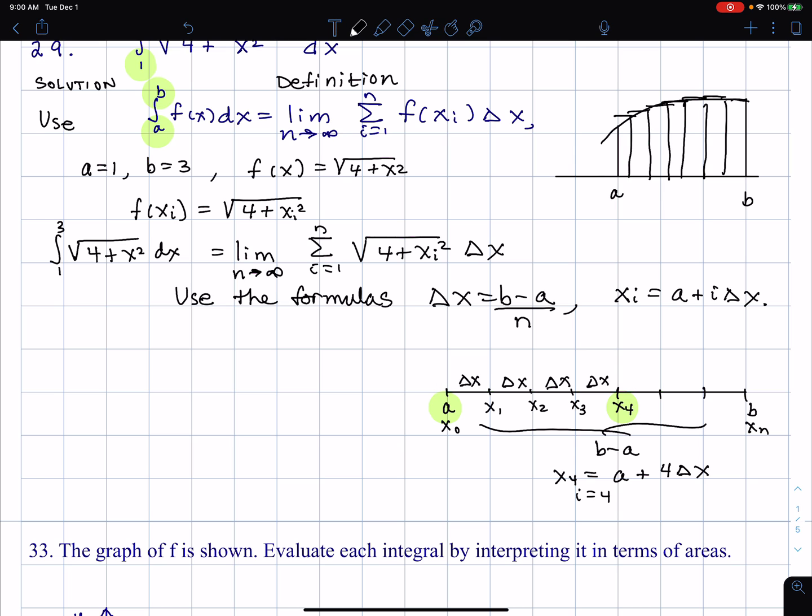Maybe I'll need more space for this. So delta x is equal to b minus a over n. Well, b minus a is three minus one divided by n, and that's two over n. On the other hand, xi is a plus i delta x. Well, a is one, and then I have i times delta x, which I just found out is two over n. So we can maybe make it look a little better. Delta xi is one plus two i over n.